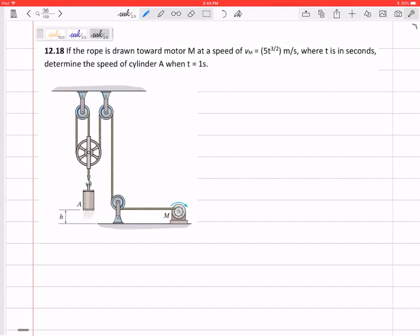All right, so let's look at this one. If this rope is drawn toward motor M at a speed of 5t to the 3/2 meters per second, where t is in seconds, determine the speed of the cylinder at A when t equals 1 second.